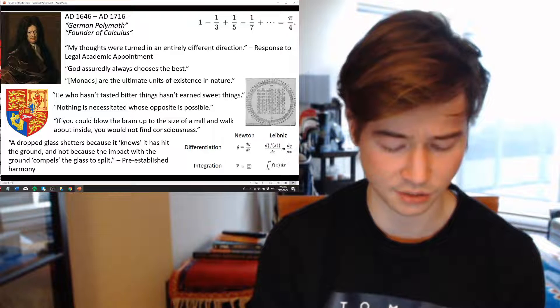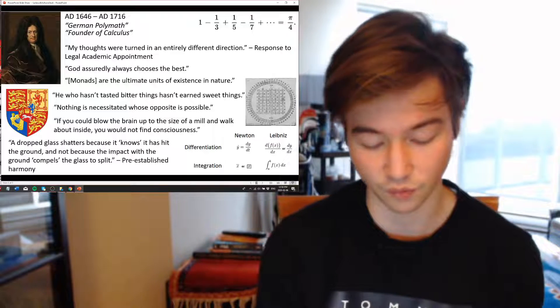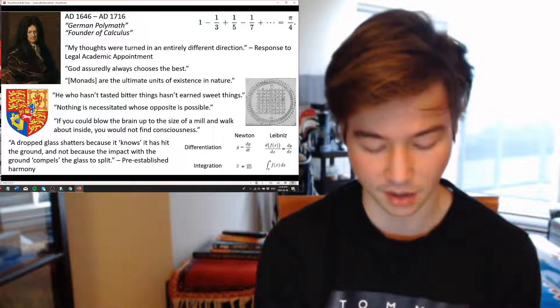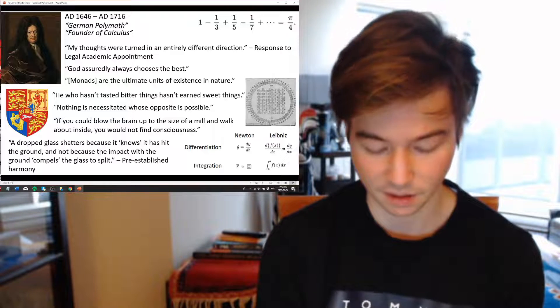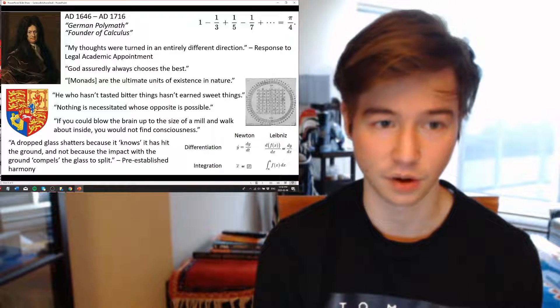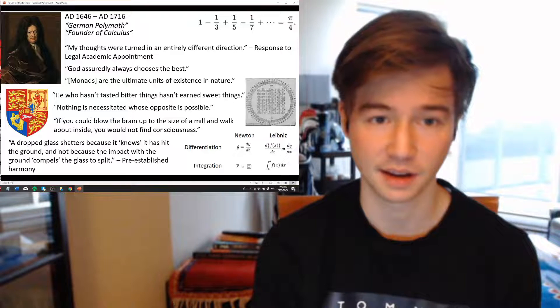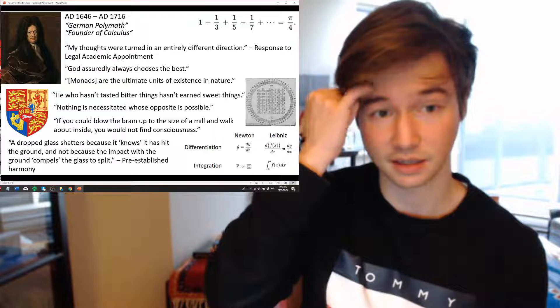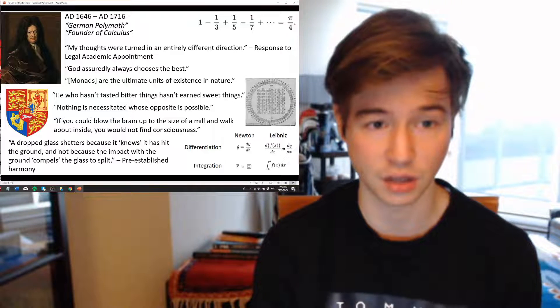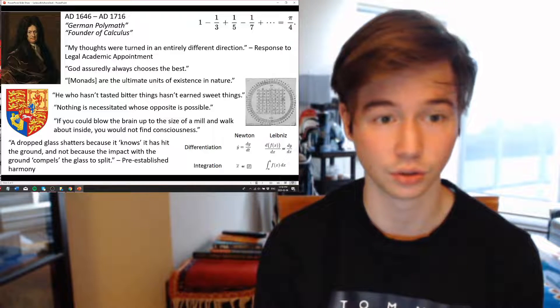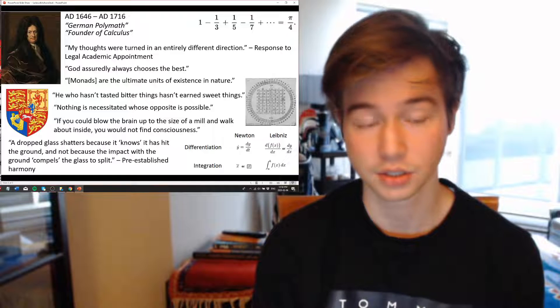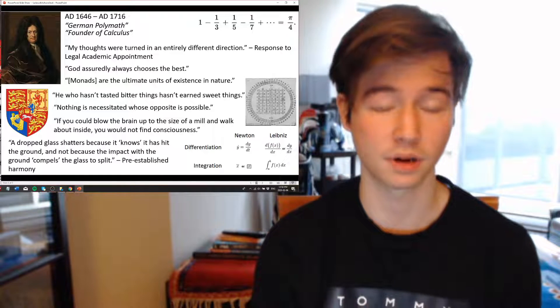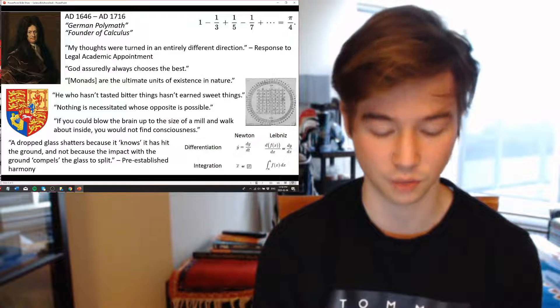At this point, he also starts referring to himself as Gottfried von Leibniz, which would have implied that he was a member of the nobility. However, no documents confirm that. So, I think he was somewhat of a social climber, looking to sort of circumvent his born class.